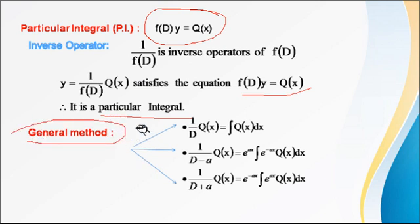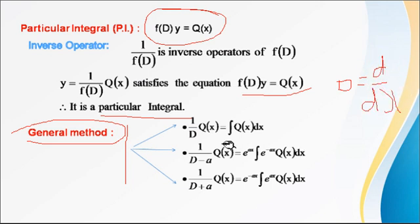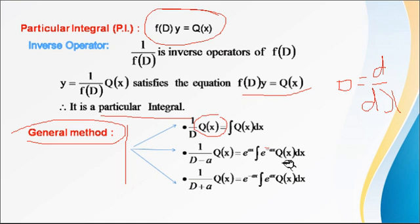For this we have to remember these formulas. D is the differential operator equal to d by dx. So 1 upon D of Q(x) equals the integral of Q(x) dx. 1 upon (D minus a) of Q(x) equals e raised to ax into the integral of e raised to minus ax times Q(x) dx. 1 upon (D plus a) of Q(x) equals e raised to minus ax into the integral of e raised to ax times Q(x) dx. Note: when there is a minus, the exponent signs alternate accordingly.